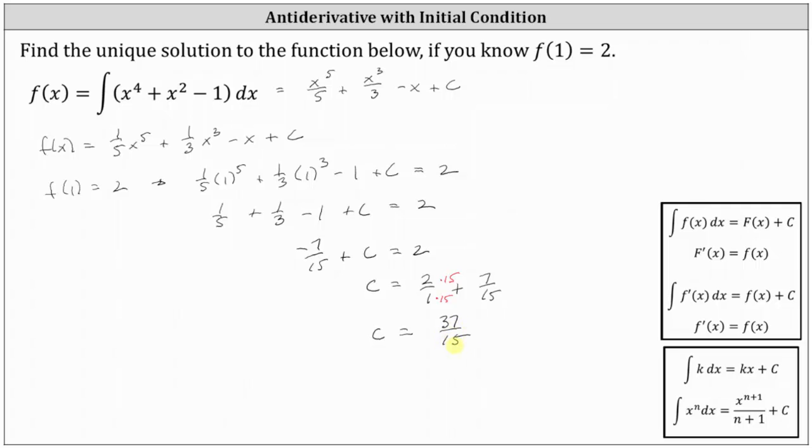Now that we know c, we know the exact function f of x. We have f of x equals one fifth x to the fifth plus one third x cubed minus x plus c where c is 37 fifteenths.